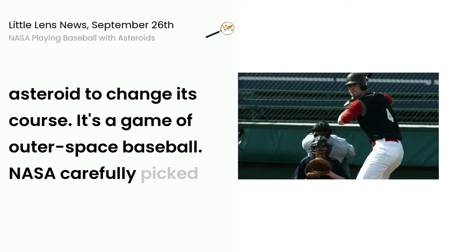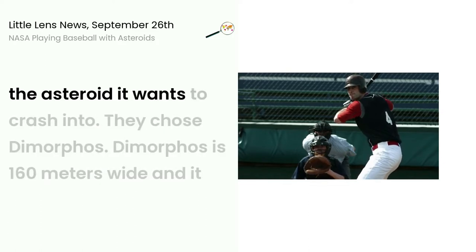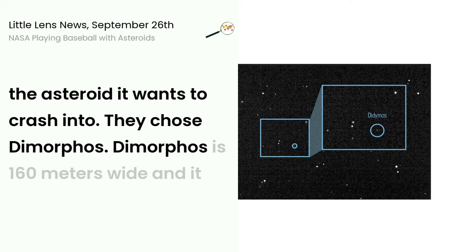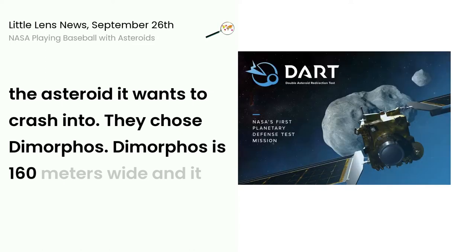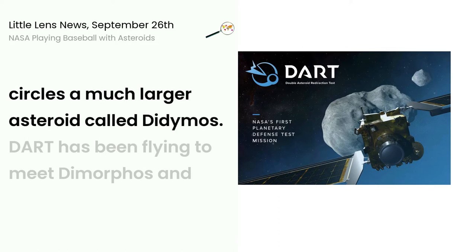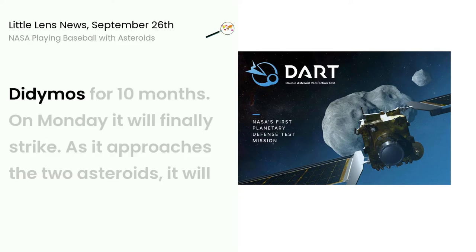NASA carefully picked the asteroid it wants to crash into. They chose Dimorphos. Dimorphos is 160 meters wide and circles a much larger asteroid called Didymos. DART has been flying to meet Dimorphos and Didymos for 10 months.